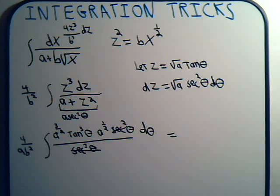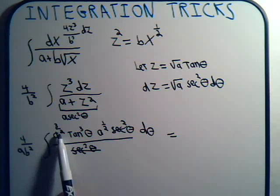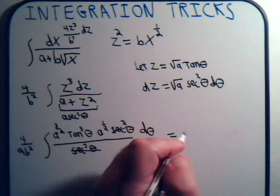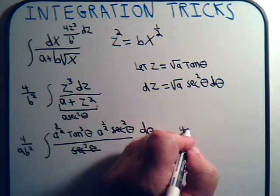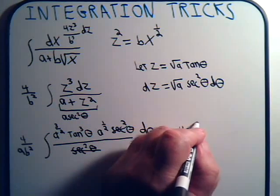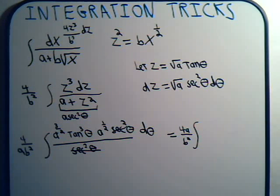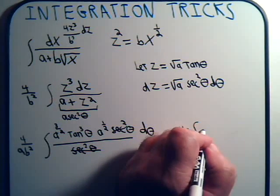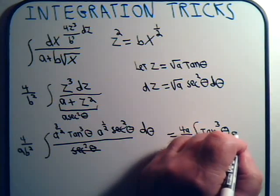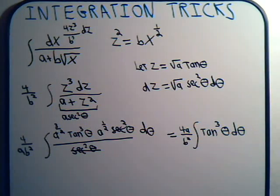We have a to the three-halves times a to the one-half, which is a squared, divided by a. So our constant terms give us 4a over b squared. And then we're left with the integral of tangent cubed of theta.